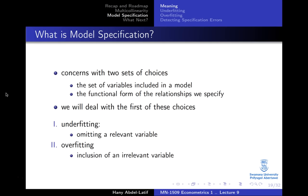Given that we already talked about functional forms in a separate lecture, what we will focus on in this lecture is the choice of variables. We could have one of two problems here: we could have an underfitted model or an overfitted model. An underfitted model means that you have omitted some relevant variables — some important variables that affect or determine the behavior of the dependent variable.